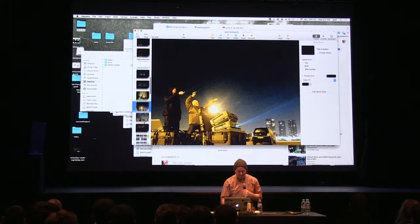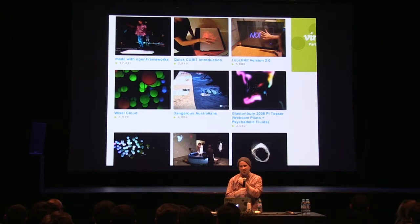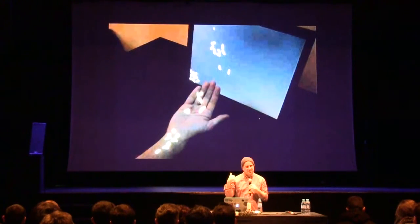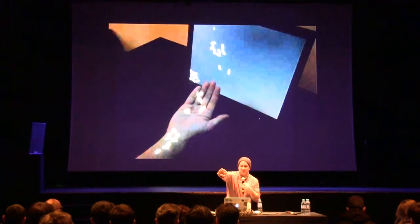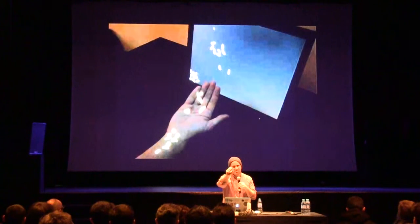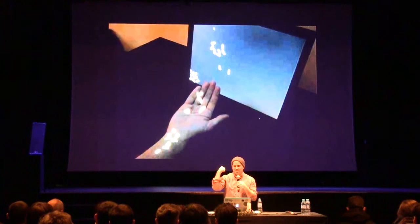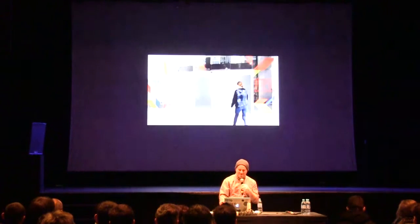One of my favorite projects for the idea of poetry is by artist Chris Sugrue — it's called Delicate Boundaries. It's basically a computer screen, and when you put your hand next to it, there are bugs moving on the screen that actually come off the screen onto your hand. We always talk about artwork leaving the screen, and this is a beautiful example of artwork coming off the screen and interacting with your body.